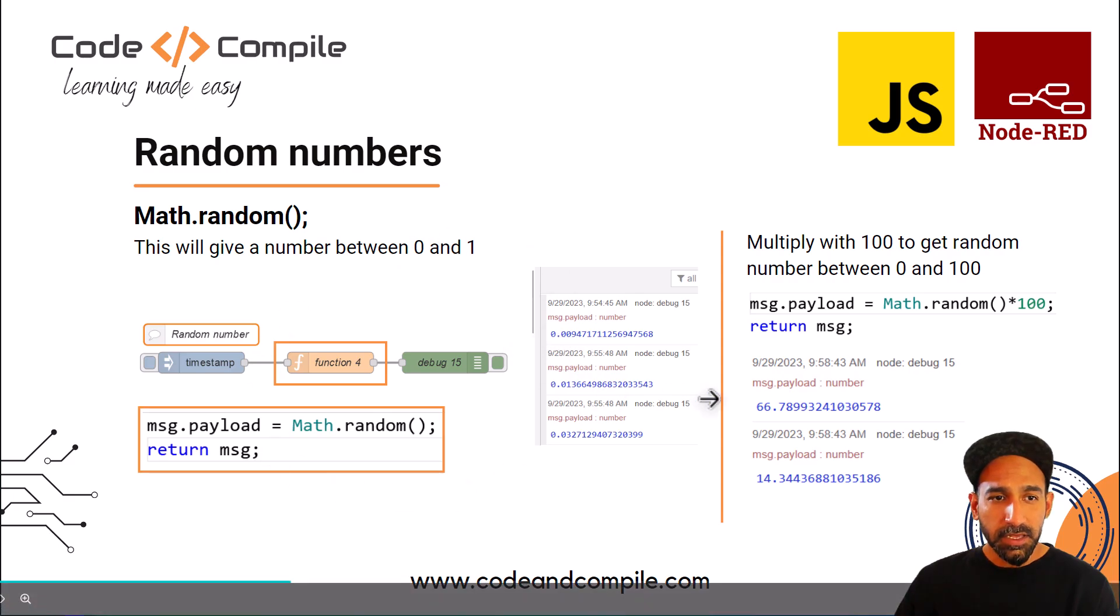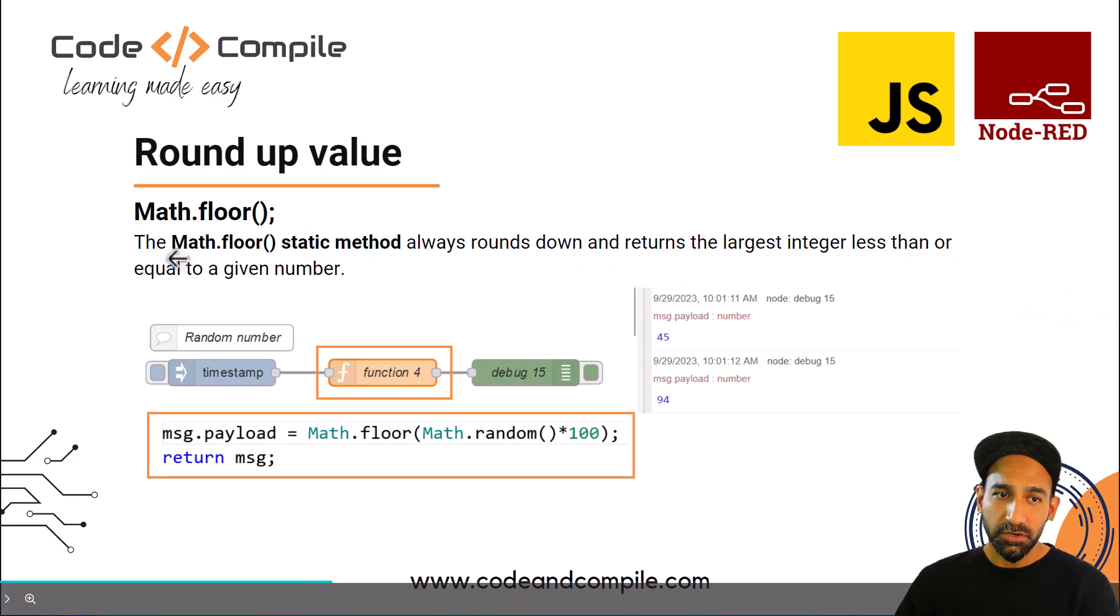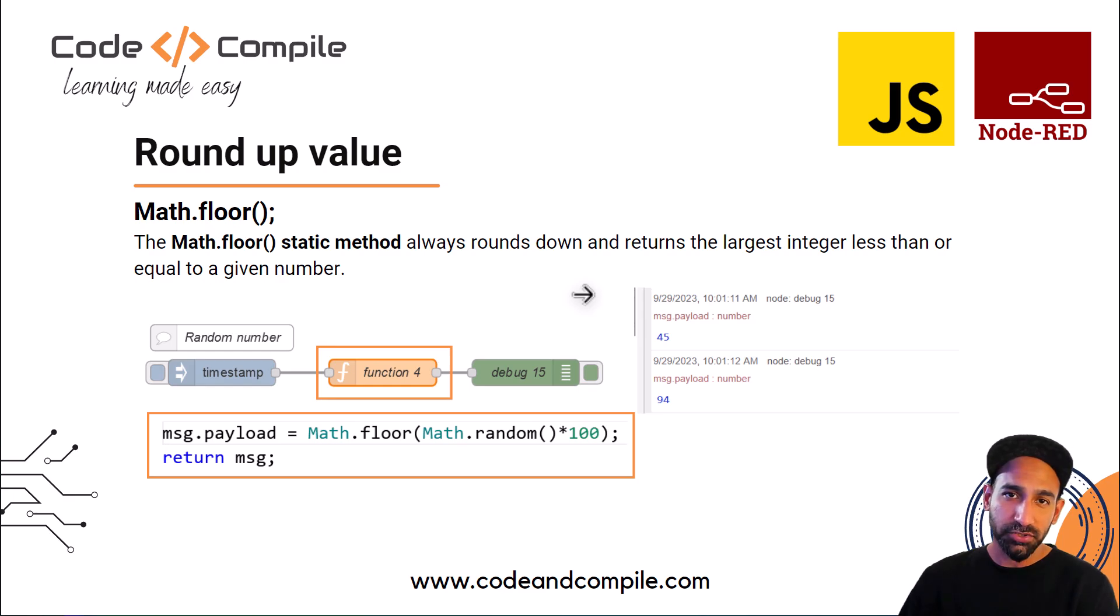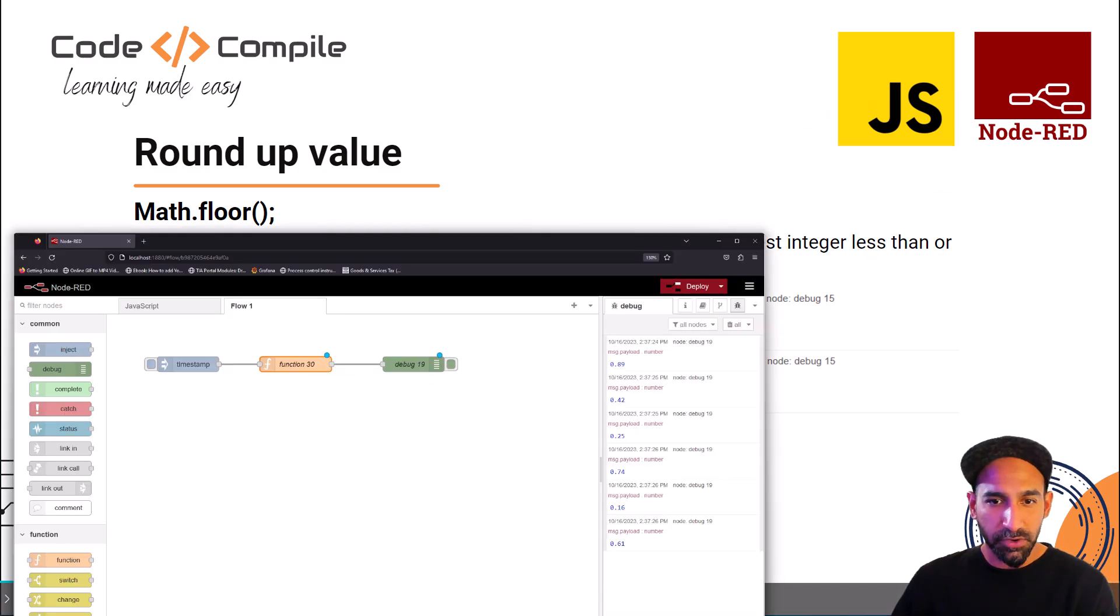You can see how easy it is to get your output in random number using the functions. Now the next command was Math.floor. It's a method to round up your value to the largest integer less than or equal to a given number. For example, here we have Math.random multiplied by one hundred and the whole function is Math.floor, so it will just round up the value.